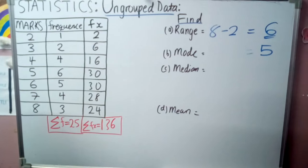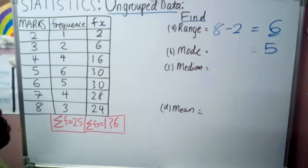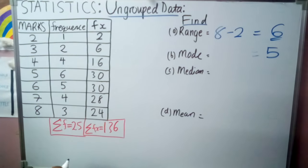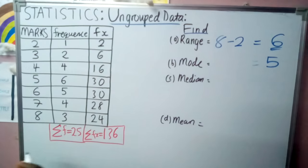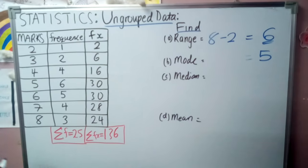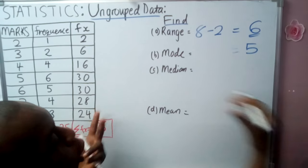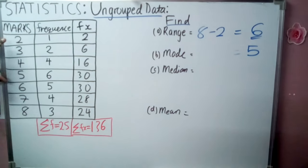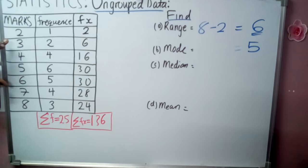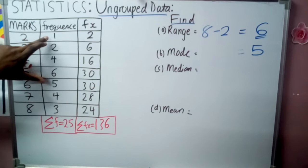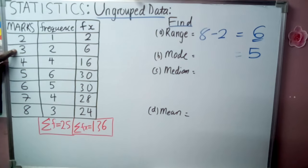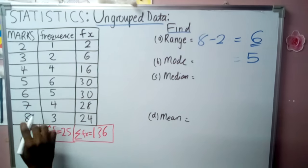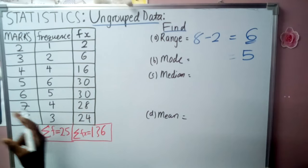Now, median. Median is the data which is in the middle after arranging all the data in order. When you look at our data, we have 2 repeating 1 time, 3 repeating 2 times, and so on. We can have 2 methods. One method, we can list all this data.